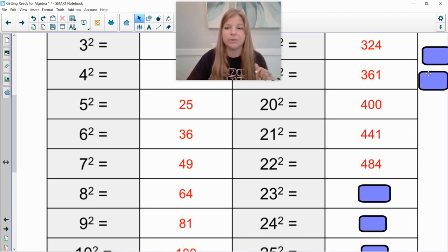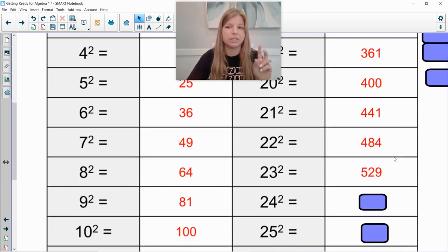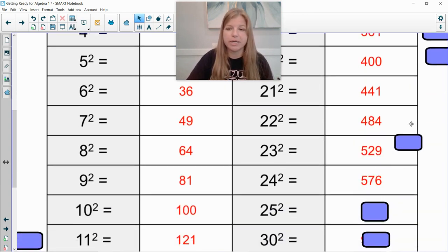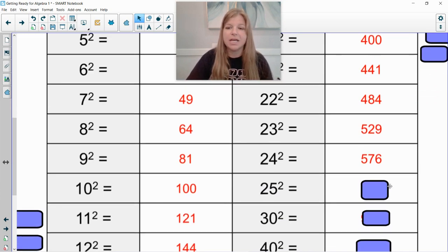22 squared is 484. 23 squared is 529. There's only two in the 500s. 24 squared is 576. And then 25 squared is 625.